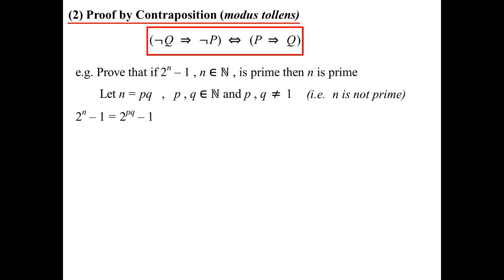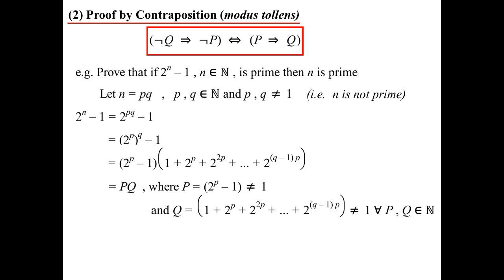So 2^N − 1 becomes 2^(PQ) − 1, which equals (2^P)^Q − 1 by index laws. Using the factorization of a^n − b^n, I get (2^P − 1) as one factor and a second factor in Q. So I've written it as two factors. My two factors are 2^P − 1, which cannot equal 1 because P can't equal 1 (that would give 2 − 1 = 1). And the second factor, which equals 1 + 2^P + 2^(2P) + ... — since it's 1 plus all these positive terms, it must be bigger than 1. So Q's factor can't equal 1 either.